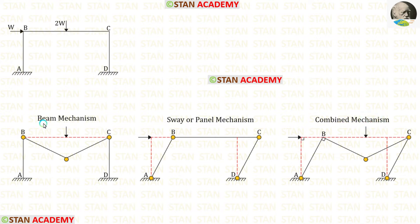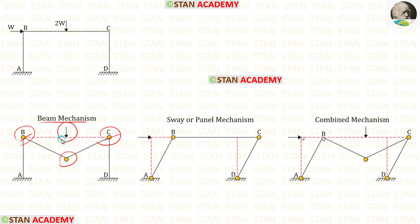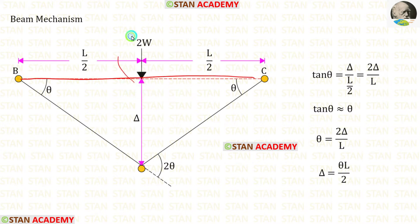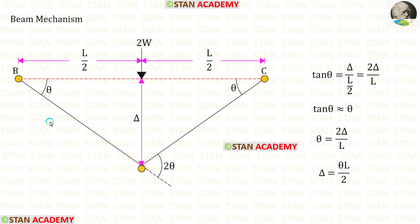First let us see the beam mechanism. In this mechanism, at joints B and C we will have plastic hinges. The third plastic hinge will occur under the point load. Since the point load acts at the center of beam BC, we will have a symmetrical triangle, and the angles at points B and C will be the same. Let us call those angles theta, so the angle under the point load is theta plus theta, which gives 2 theta.